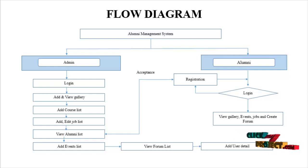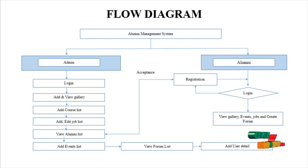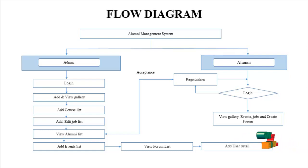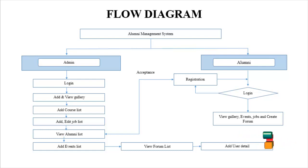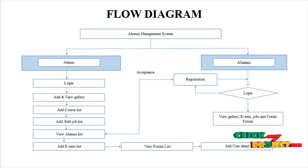The second module is the alumni process. When they start their process, they should register in this portal. After the registration, they should get acceptance from the admin. Then the alumni can log in to this portal. After the login process, they can view the gallery of the college, events of the college, view the job opportunities provided by admin, and create a post. These two modules are present here.